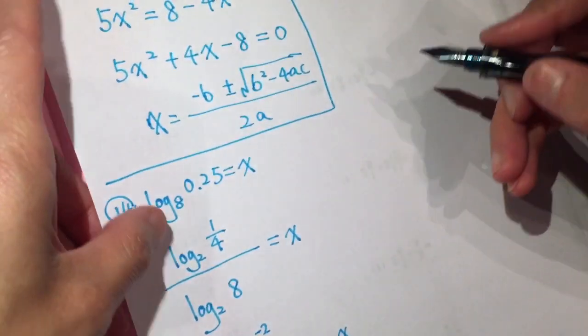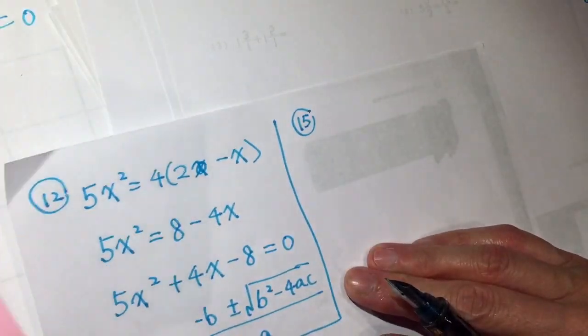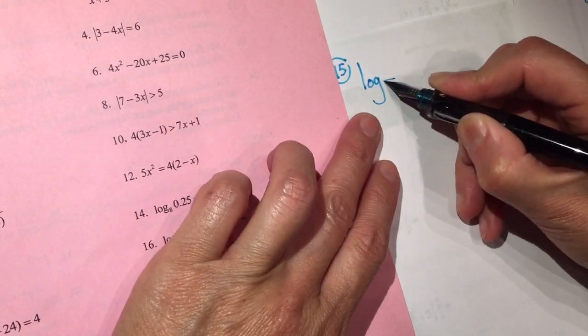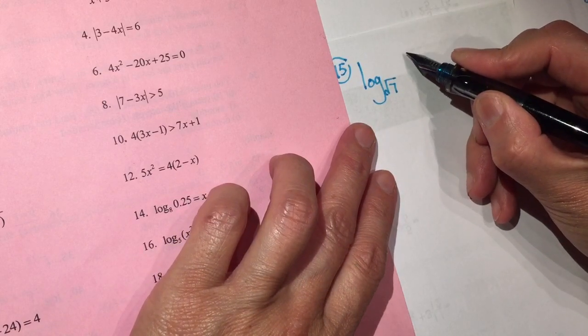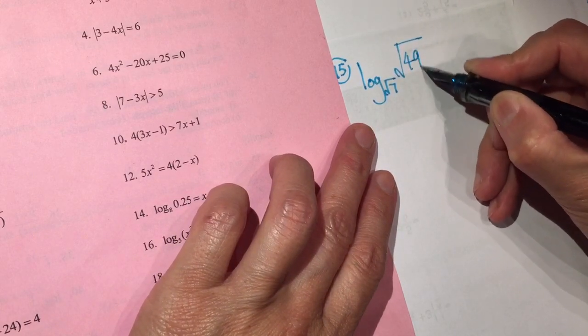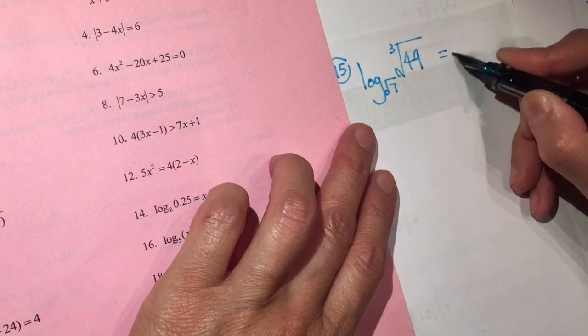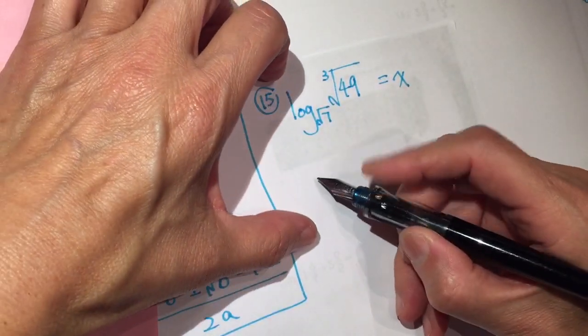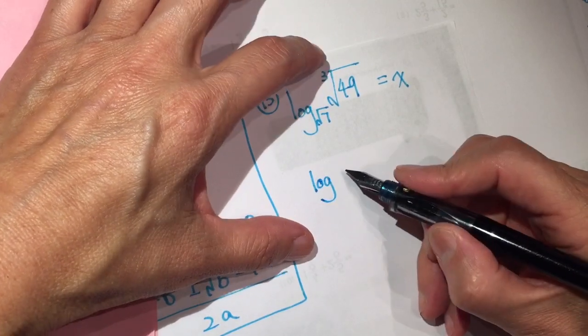Okay, number 15. Log square root 7. So we change the base, and this one you can change into log 7.